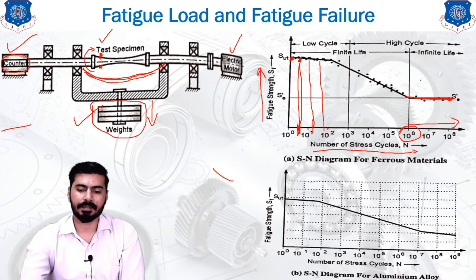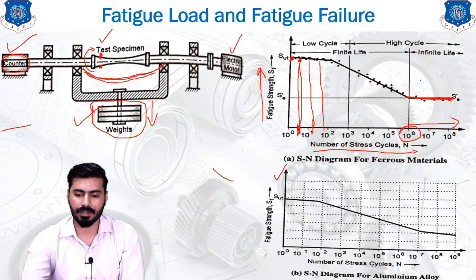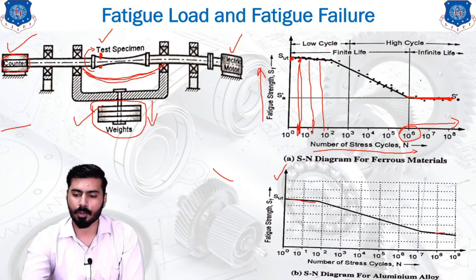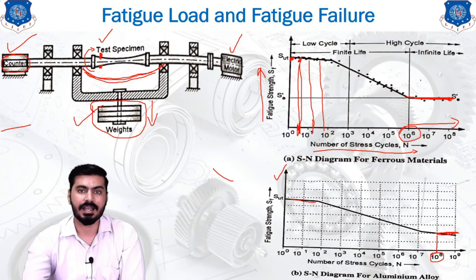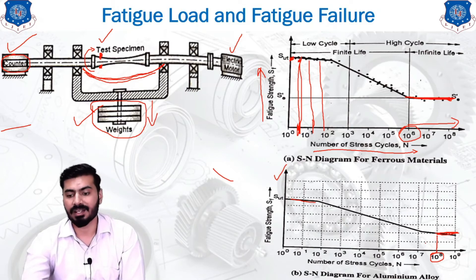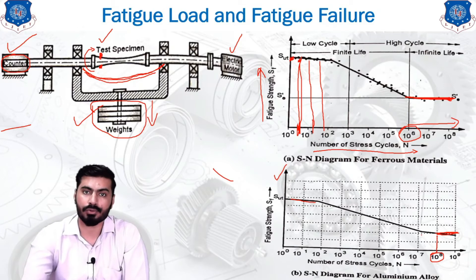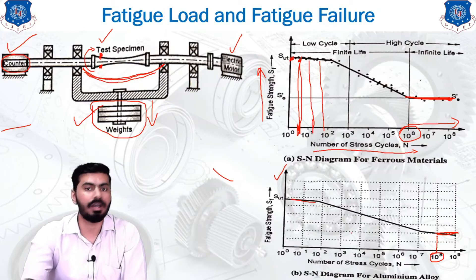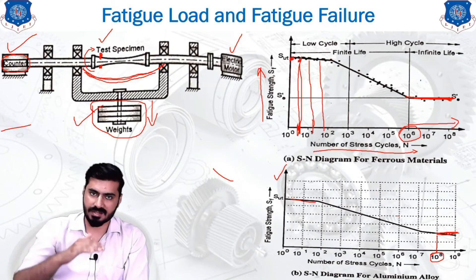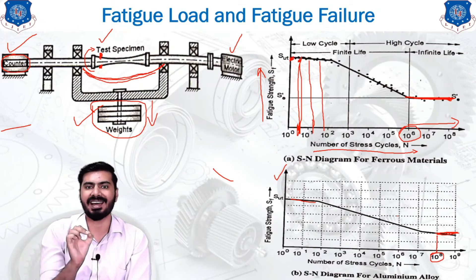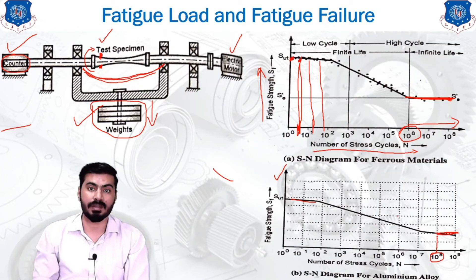Similarly, you can plot an S-N diagram for aluminum alloys and you will get a similar curve. For aluminum alloys, the graph becomes almost horizontal after reaching 10^8 cycles. So for aluminum alloys, the infinite life starts after 10^8 number of cycles, provided you reduce the stress to a sufficiently low level.